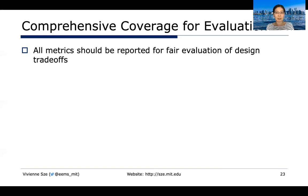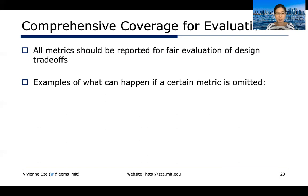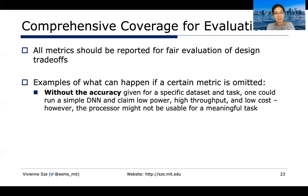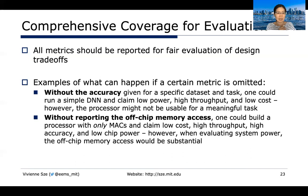It's really important to have a comprehensive coverage of all these metrics for evaluation, to allow assessment of various design trade-offs. If a metric is omitted, problems arise — for example, without reporting accuracy with a specific dataset, one could run a simple DNN on an easy dataset and claim low power, high throughput, and low cost, when the processor might not be usable for a meaningful task. Without reporting off-chip memory access, one could build a processor with only MACs and claim low cost, high throughput, and low chip power, while the off-chip memory access and system power would actually be substantial.